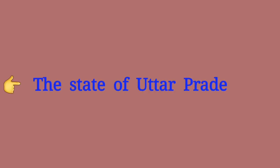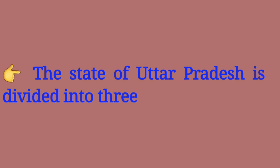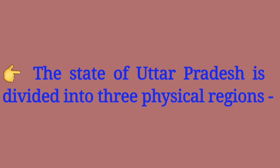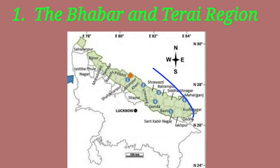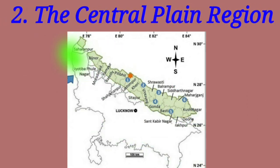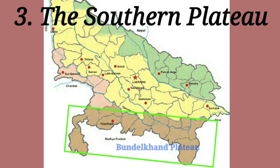The state of Uttar Pradesh is divided into three physical regions: the Bhabar and Terai region, the central plain region, and the southern plateau, which is also known as the Bundelkhand plateau.